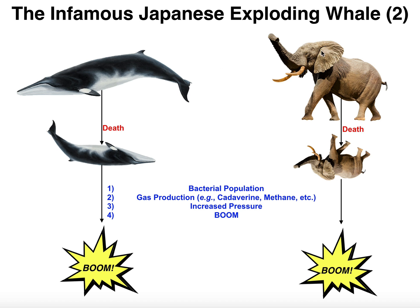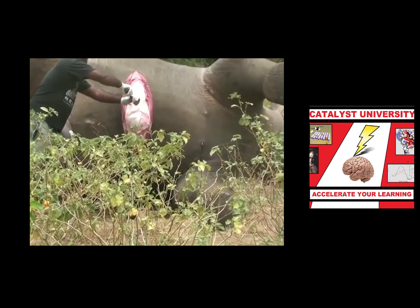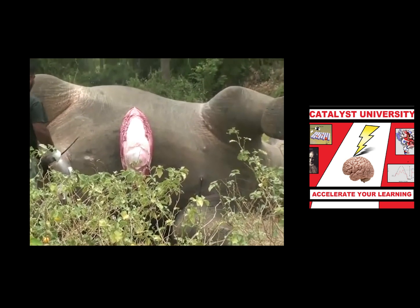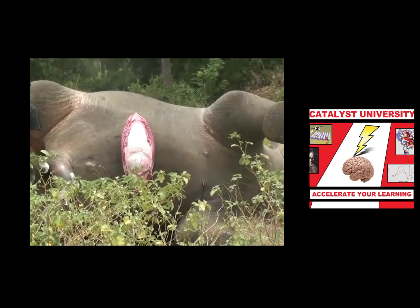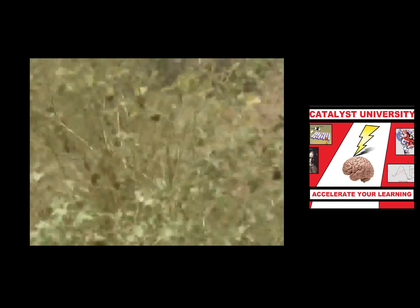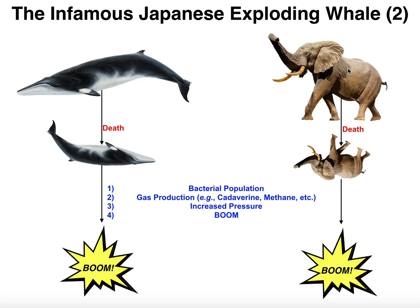This process also occurs with elephants. Even though the elephant is a terrestrial animal whereas the whale is aquatic, the same mechanism is at play. The elephant dies, it gets overpopulated with bacteria, subsequent gas production causes increased pressure, and then boom — it explodes.